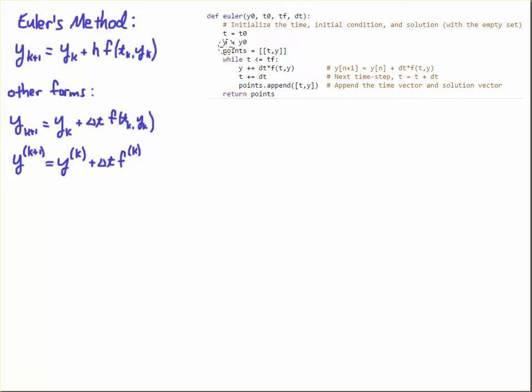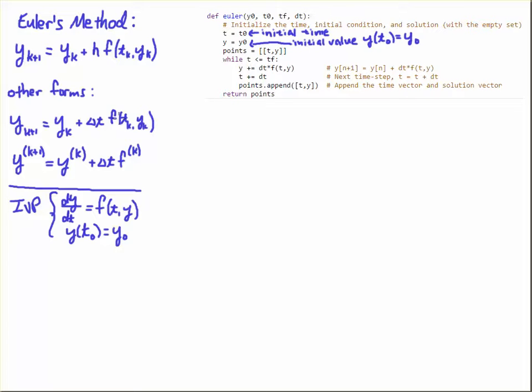What you're going to do in your code is initialize your time variable t and your ODE variable (your dependent variable y) with your initial time and initial value. The points here - this is going to be the output, so we're going to return the points. We're going to initialize the points as a vector of ordered pairs. The first ordered pair in this array of points is going to be [t, y], which is actually [t naught, y naught].